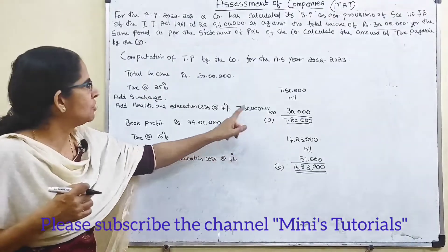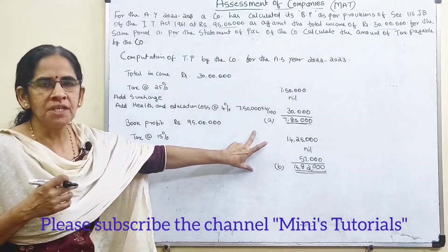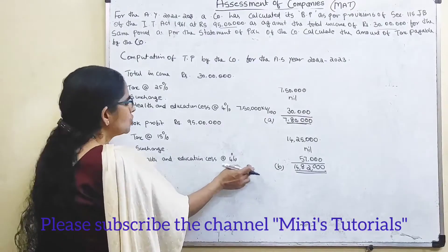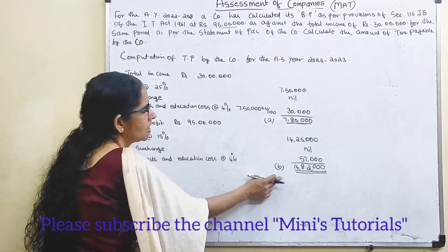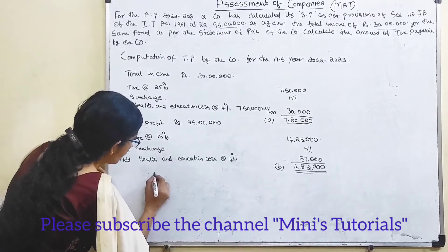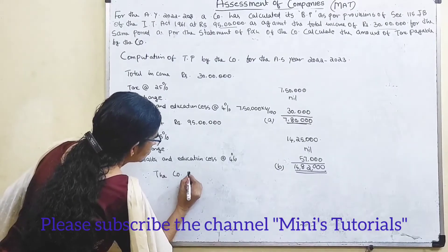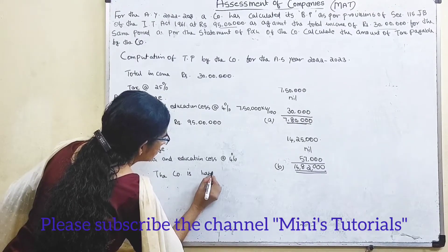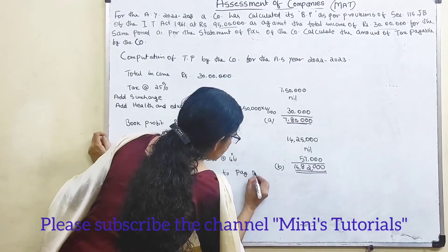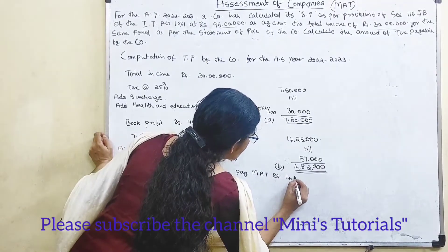We will make a comparison between the two tax payables. We compare the tax on total income and the tax on book profit. Since MAT of Rs. 14,82,000 is higher, therefore the company is liable to pay MAT of Rs. 14,82,000.